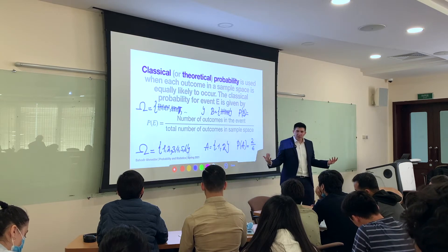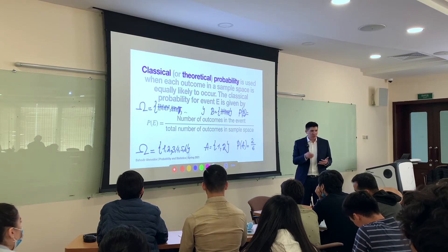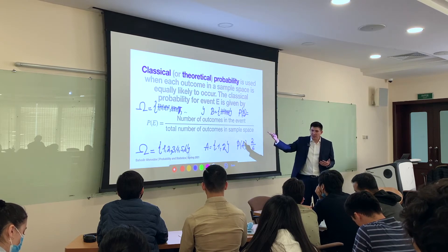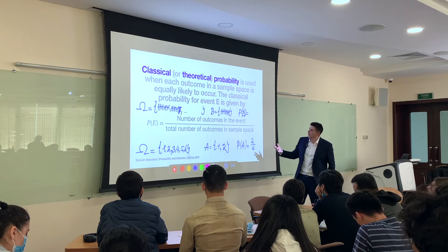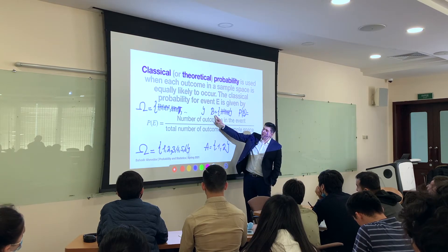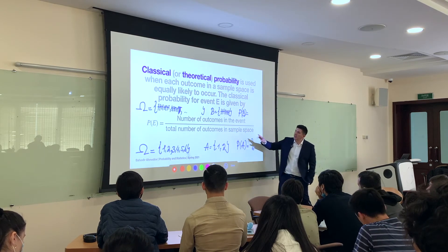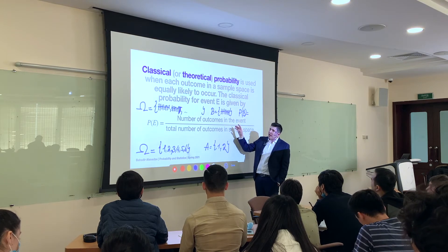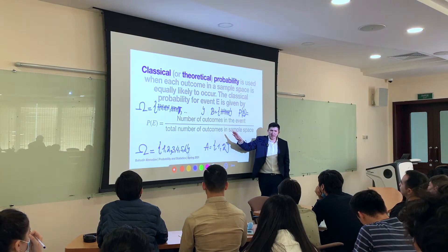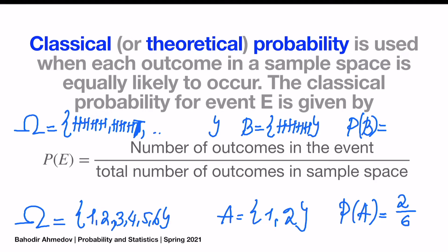All of the possible outcomes of your experiment — tossing a coin four times — are going to be included in the sample space. Now I'm going to figure out what is the probability of event B, which consists of four H's. What I have to do is divide the number of cases inside B — which is 1, because there is only one item in event B — by the number of items in omega. How many items in omega do we have? Two to the power of four.